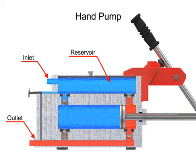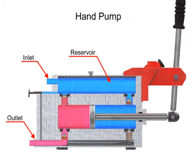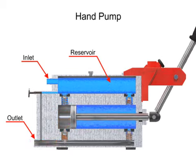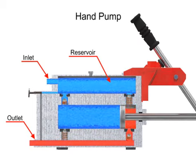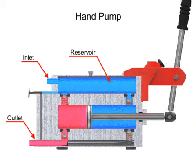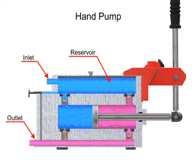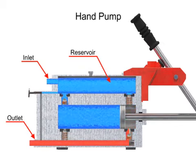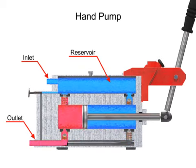Double acting hand pumps are more efficient, allowing fluid to both enter and discharge on both strokes of the piston. Moving the pump handle in either direction allows fluid to be drawn in from the reservoir and discharged via the outlet ports. Check valves in all locations prevent fluid backflow.